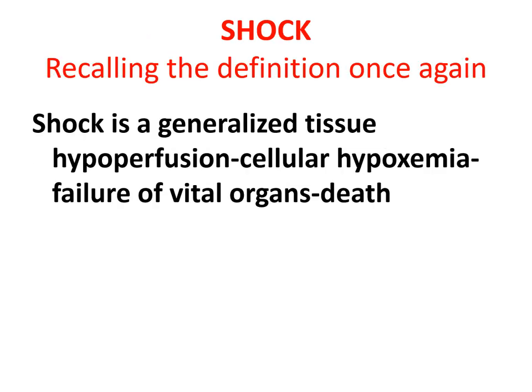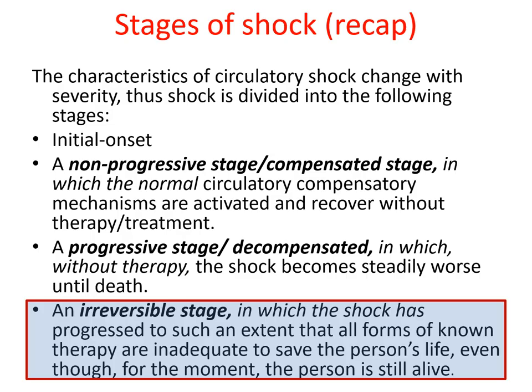Recalling the definition of shock once again: it is a generalized tissue hypoperfusion leading to failure of vital organs like heart, lung, kidney, liver, and brain, ultimately leading to death. The stages of shock — the characteristics of the circulatory shock change with the severity.